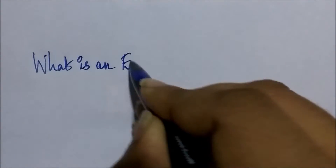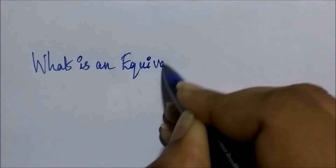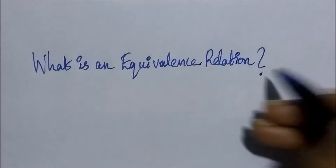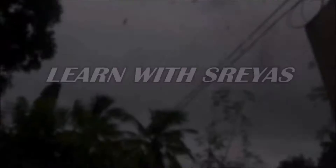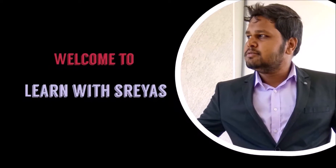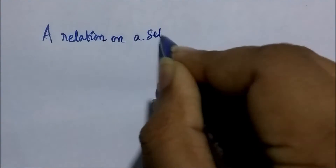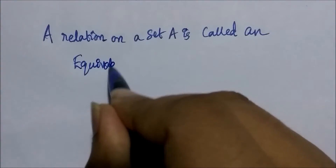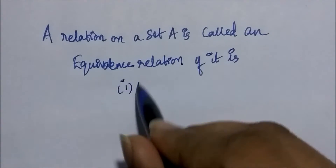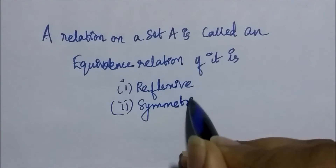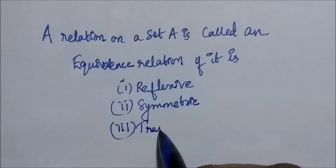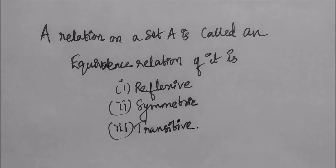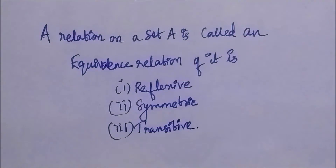Hello friends, let's get started by asking what is an equivalence relation? A relation on a set A is called an equivalence relation if it is reflexive, symmetric, and transitive. So a relation has to be at the same time reflexive, symmetric, and transitive for that relation to be an equivalence relation.